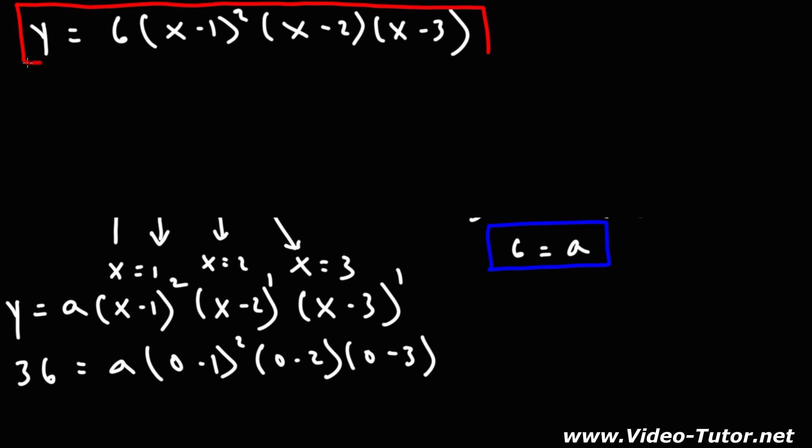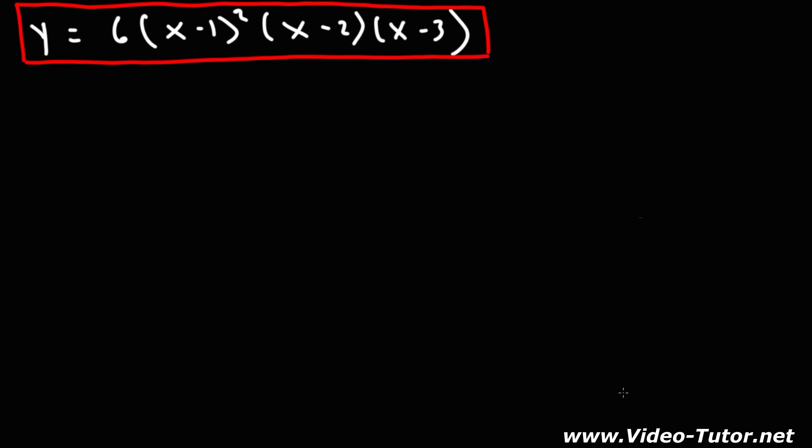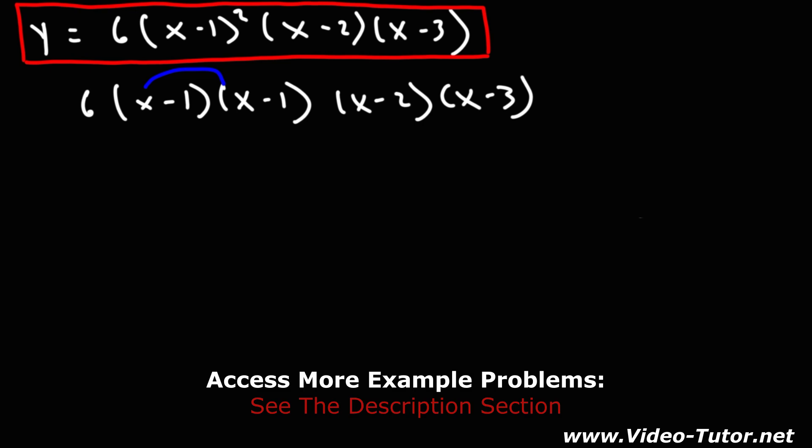Now sometimes you may need to convert the answer from its factored form to standard form. To do that, we just need to FOIL. So x minus 1 squared, I'm going to expand that. Let's begin by FOILing these two factors. This is going to be x times x, which is x squared, and then negative x, negative x, negative 1 times negative 1 is positive 1.